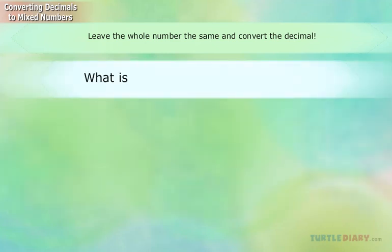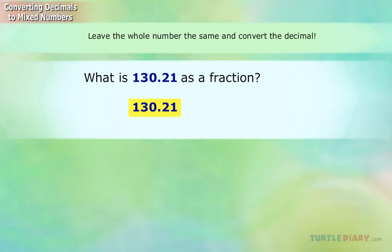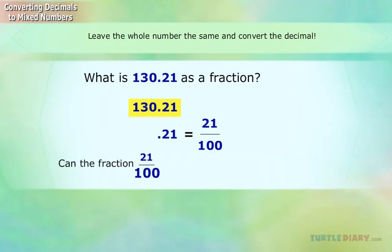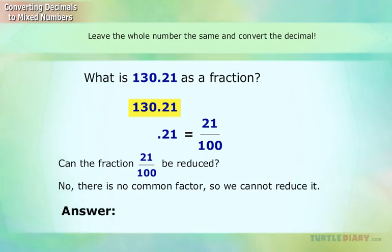What is 130.21 as a fraction? Just change .21 to a fraction: 21 hundredths. Can the fraction 21 hundredths be reduced? No — there is no common factor, so we cannot reduce it. Answer: 130 and 21 hundredths.